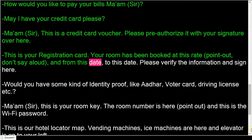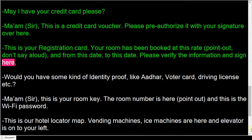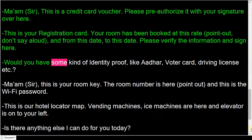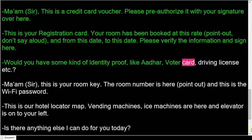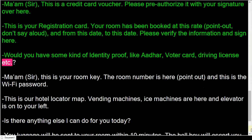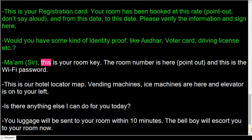This is your registration card. Your room has been booked at this rate, from this date to this date — please verify the information and sign here. Would you have some kind of identity proof, like your voter card, driving license, etc.?